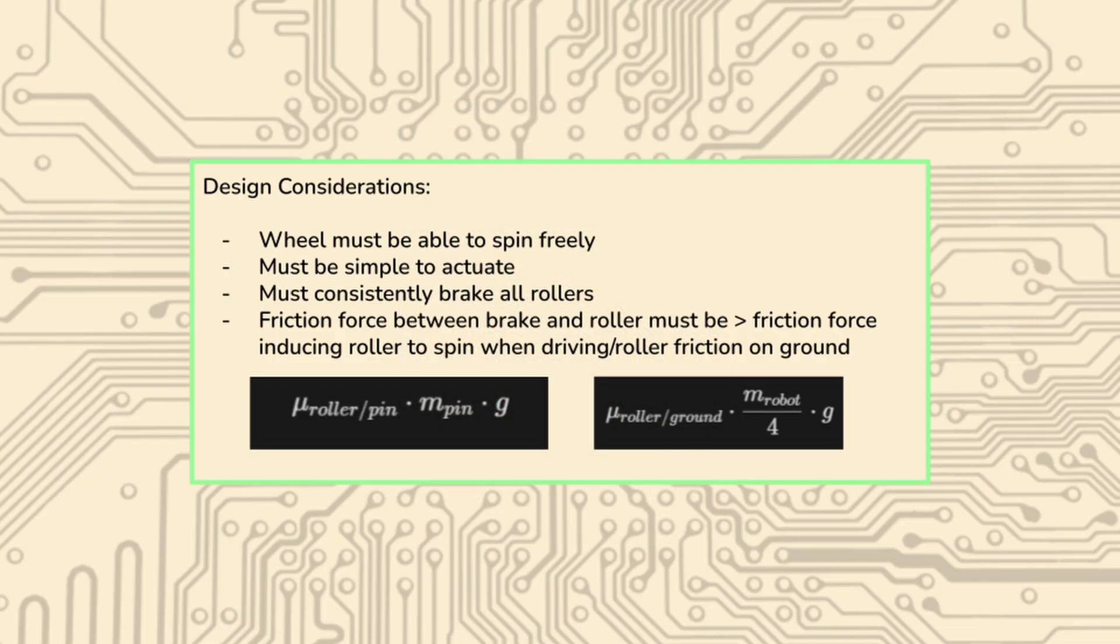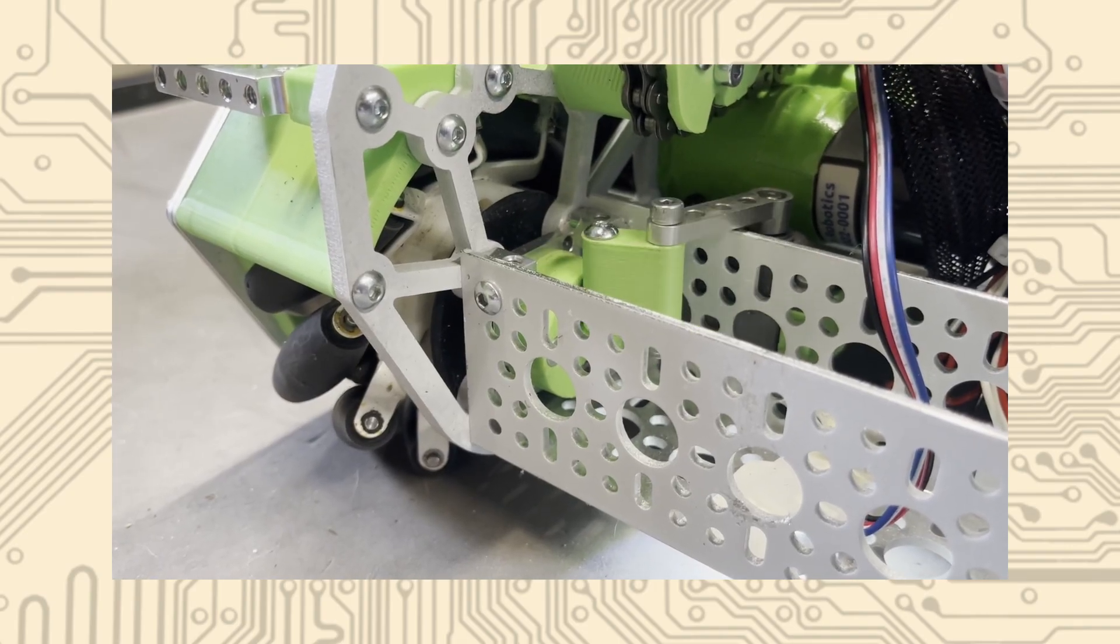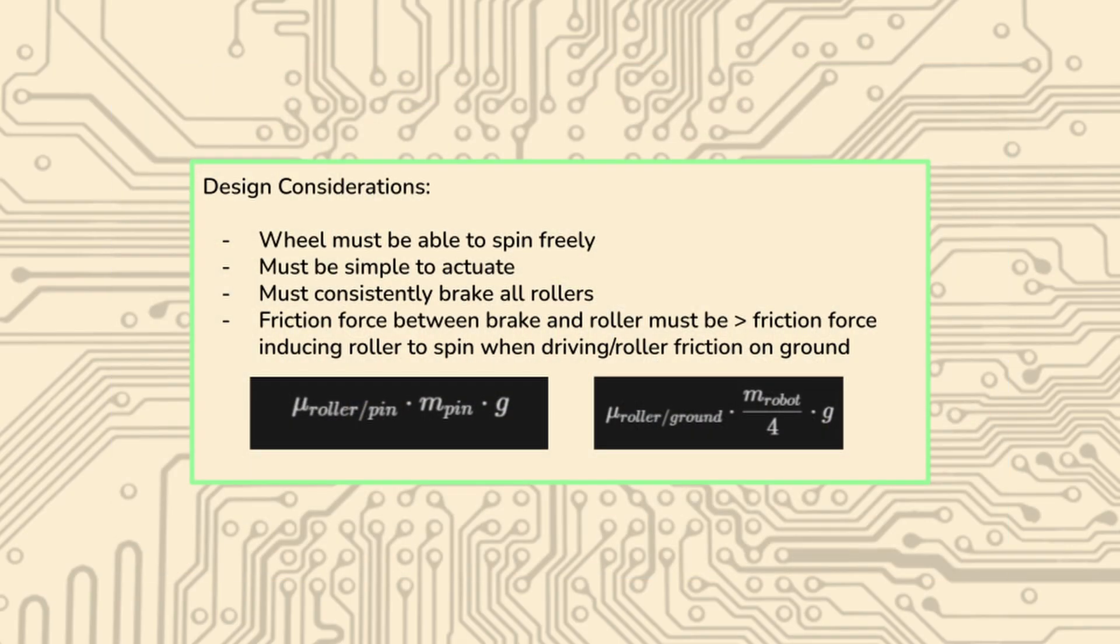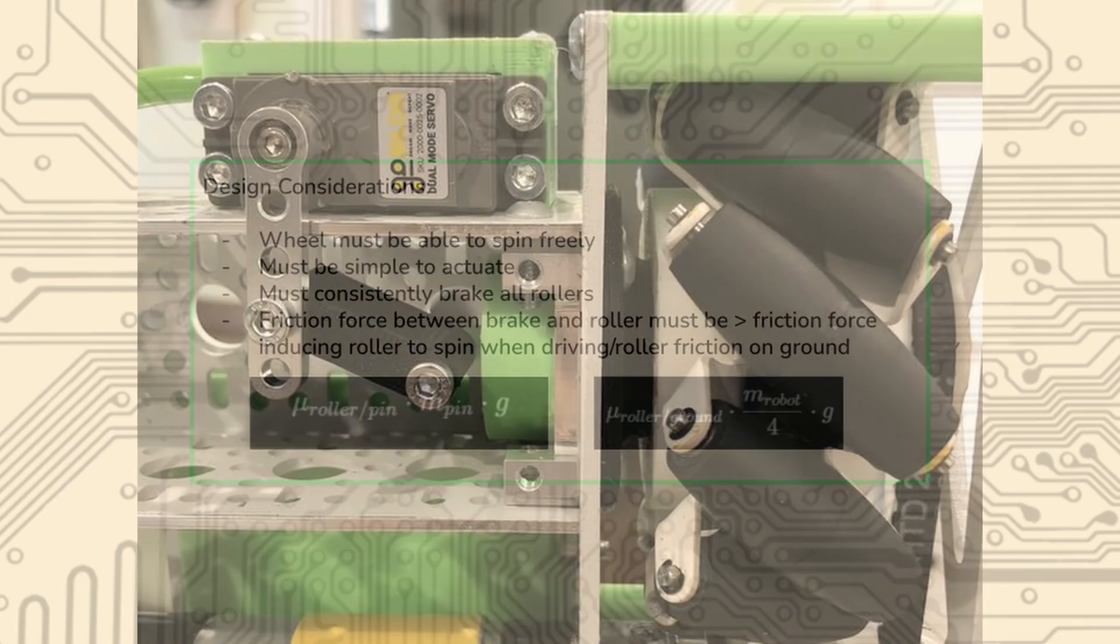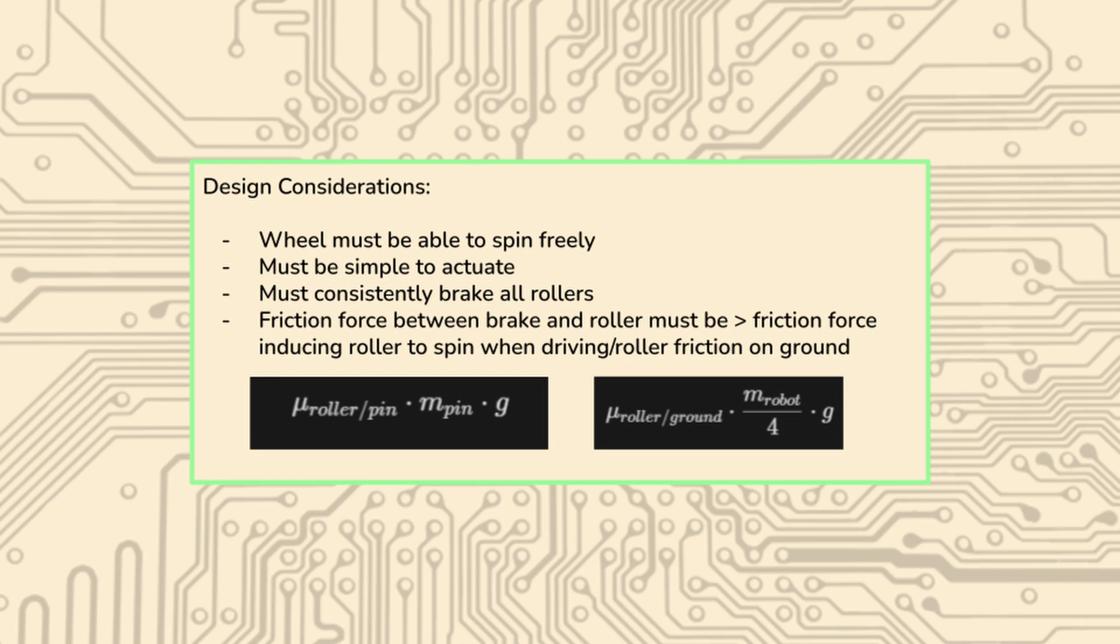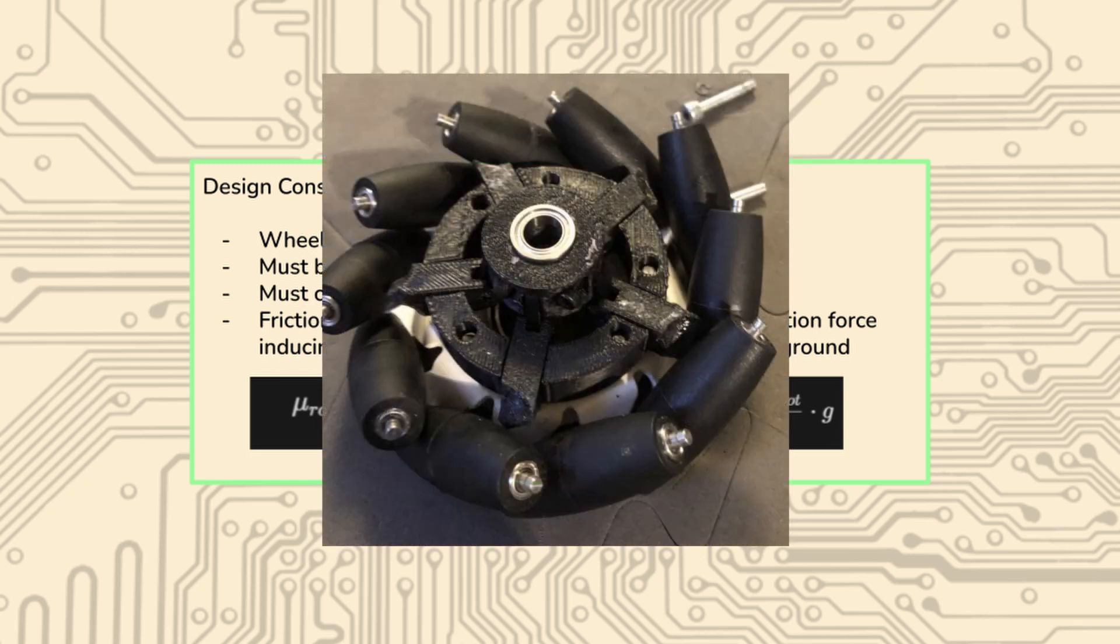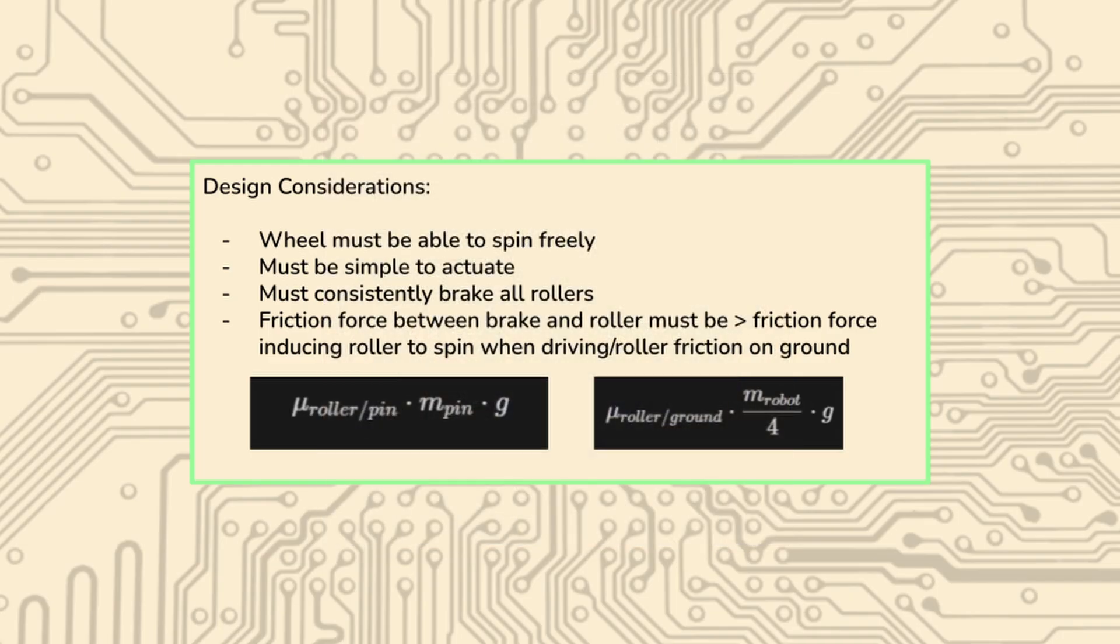It has to be simple to actuate. Generally, a pushing and pulling motion is what's best for locking mechanisms - pushing an axle into the wheel and pulling it out to actuate the braking motion. And it has to consistently brake all ten or nine or eight rollers. Whatever mechanism you're using, it has to be able to brake all of them, because if you have some sort of unevenness, it won't have all of the same benefits. The big thing for design is the friction force between the brake and the roller must be greater than the friction force between the roller and the ground. If you've taken physics 1 or mechanics, this is probably going to be pretty easy for you to look at.